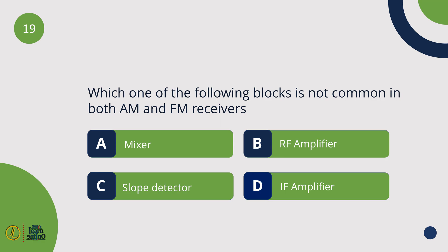Which of the following blocks is not common in both AM and FM receivers? Slope detector.